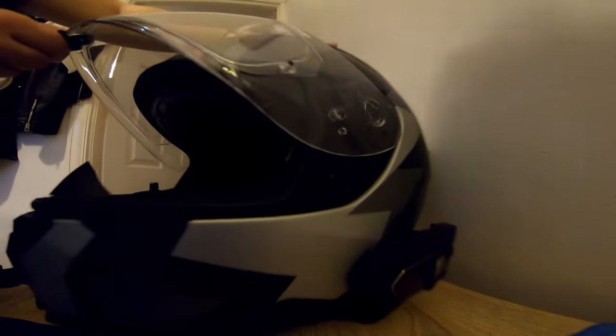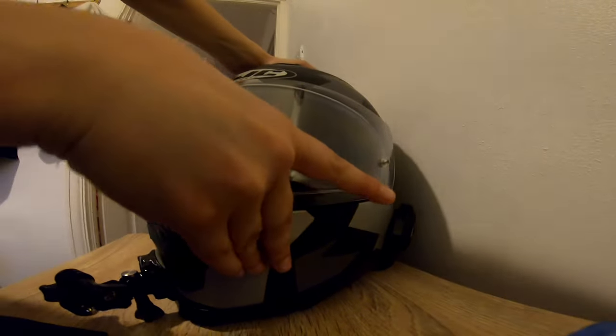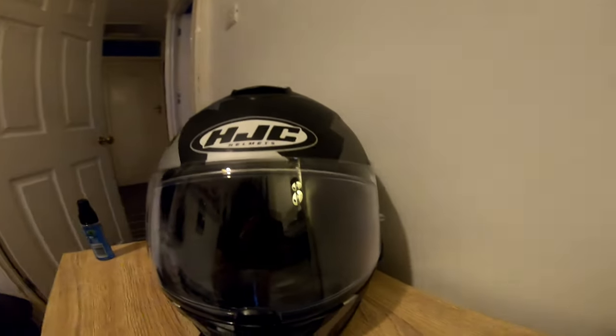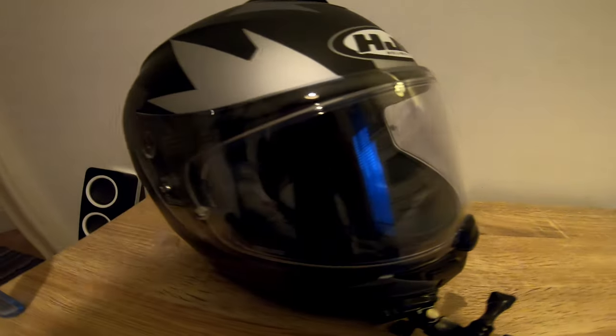Once that's all done, just open and close the visor a few times and make sure it still locks and everything. Now you should have a nice clean visor and be able to see clearly out of it. Let me know if that was helpful. Safe riding, and I'll see you guys in the next one.